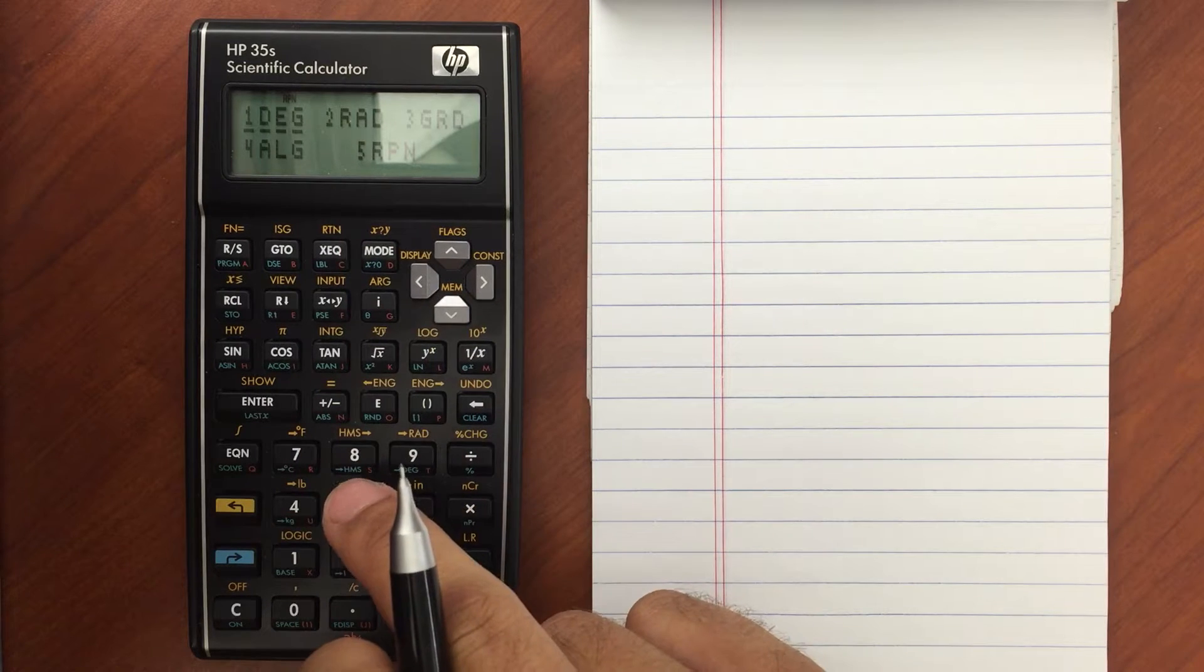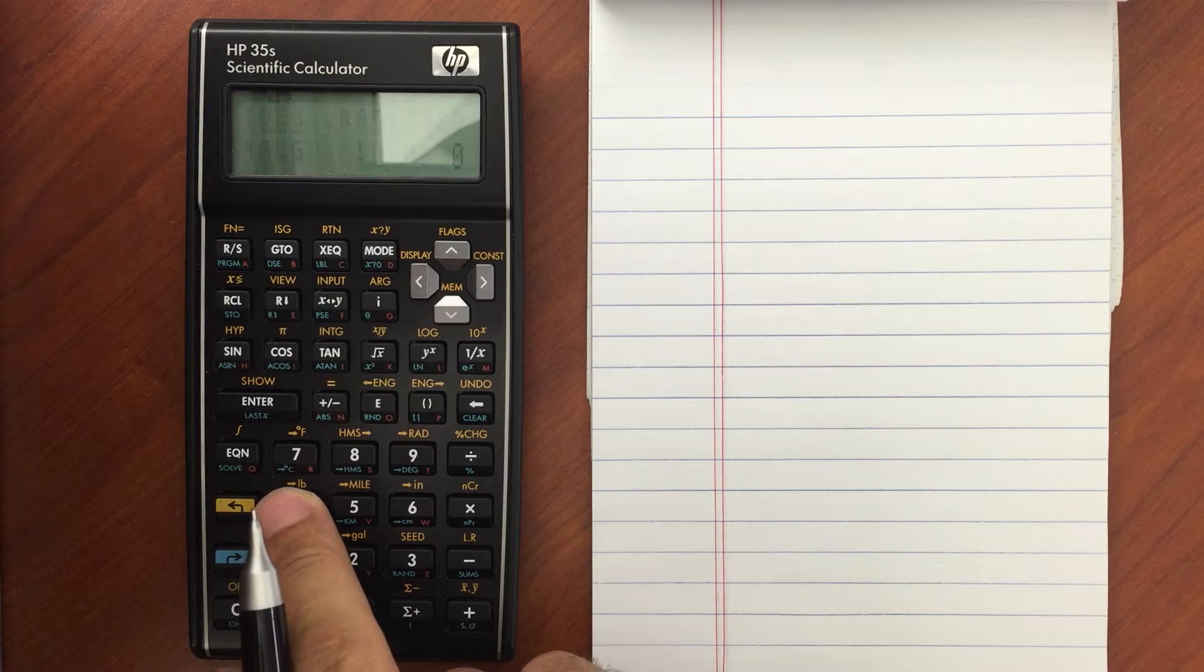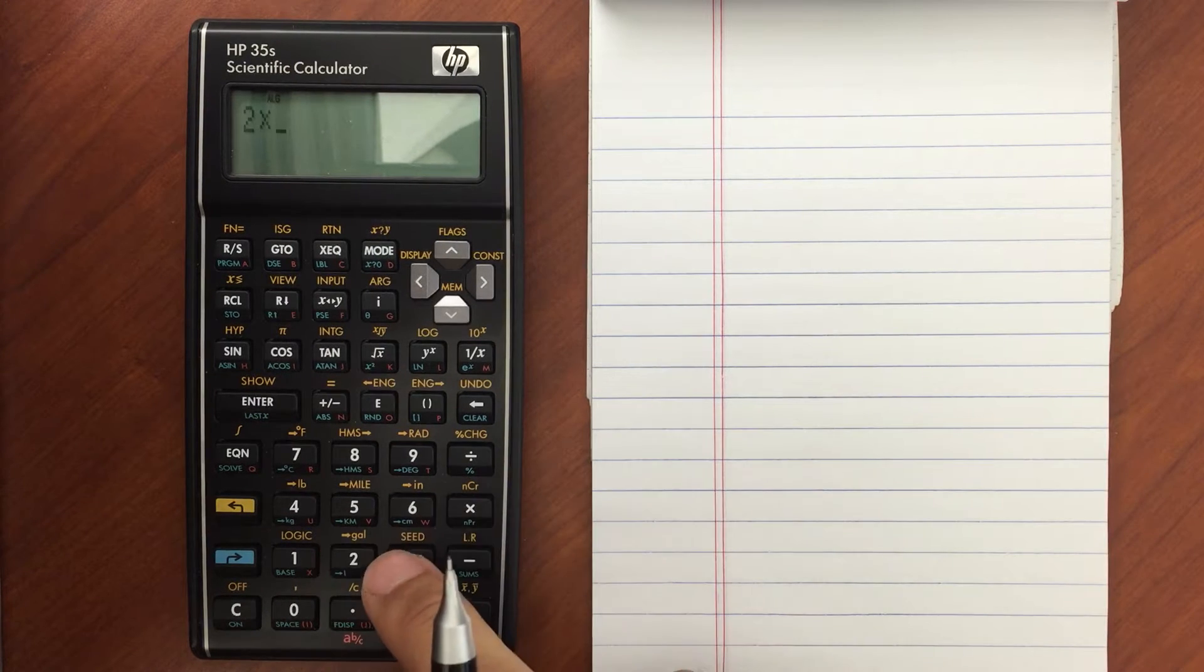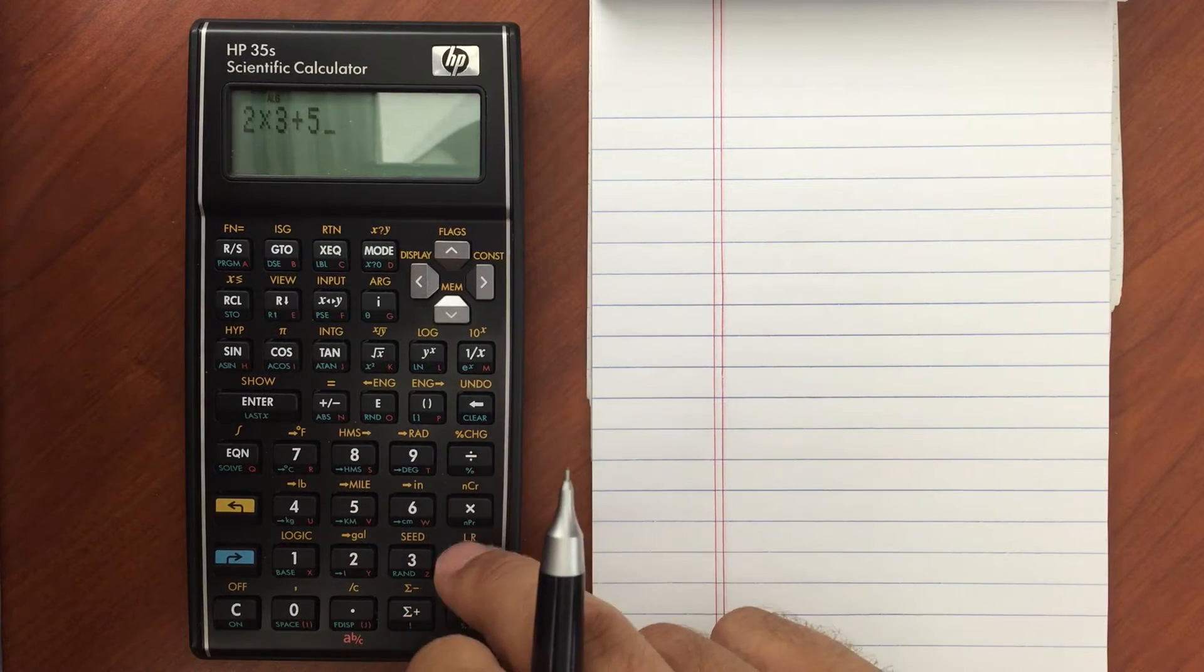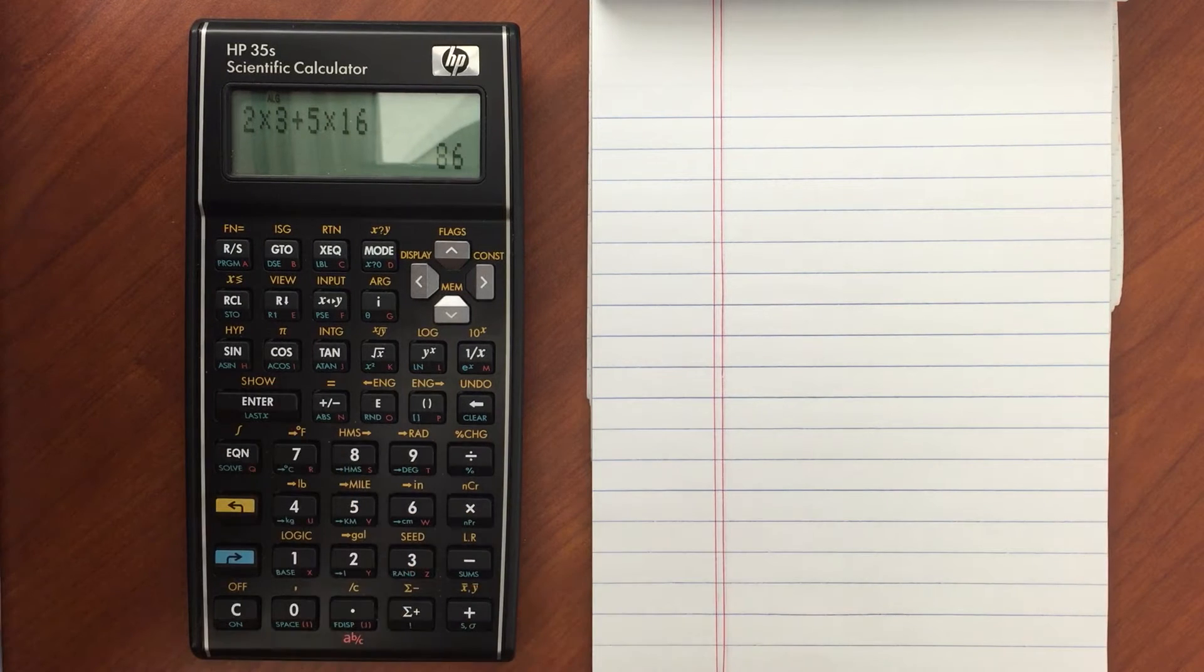So most of us are familiar with infix notation or algebraic. So if I go to mode here and then pick 4 in algebraic, then I can enter something like 2 times 3 plus 5 times 16. Hit enter, and it gives me the answer.